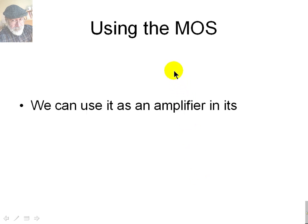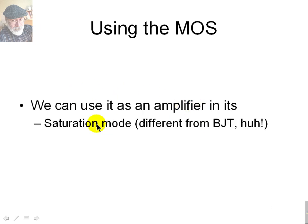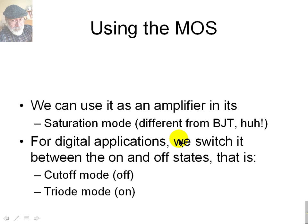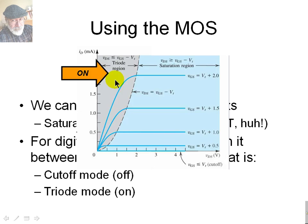How do we use the MOSFET? We can use it as an amplifier in its saturation mode. Note that the naming differs from BJT: for a BJT, saturation means the transistor operates as a closed switch between emitter and collector. For the MOSFET, saturation means the transistor works as an amplifier. For digital applications, we switch the MOSFET between ON and OFF — in cutoff mode when we want it OFF, or in triode mode when we want it ON.